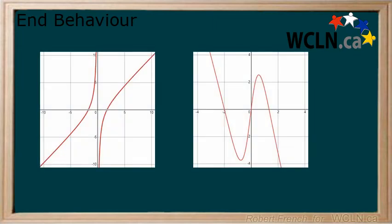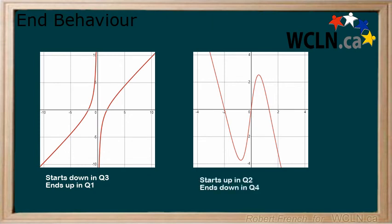Take a moment and write down the end behavior of the following two examples. Make sure to include their start and end direction and location. In the first example, it starts down in quadrant 3 and ends up in quadrant 1. In the next example, it starts up in quadrant 2 and ends down in quadrant 4.